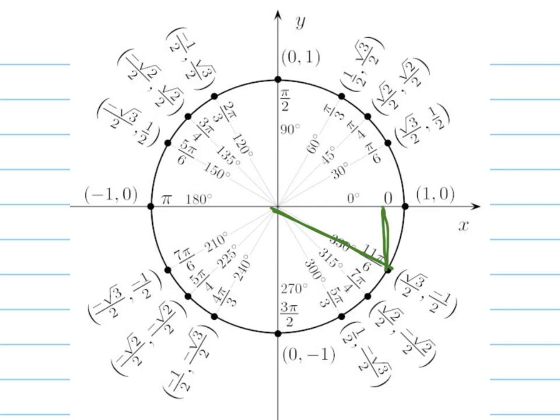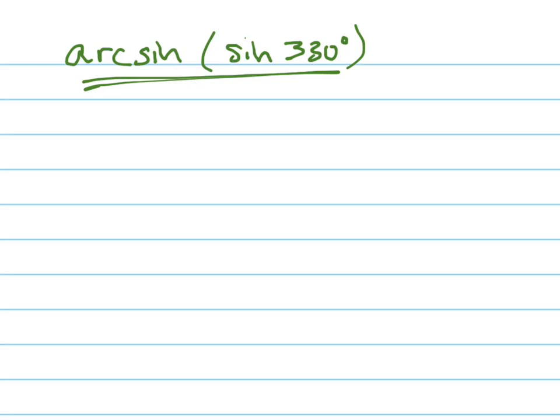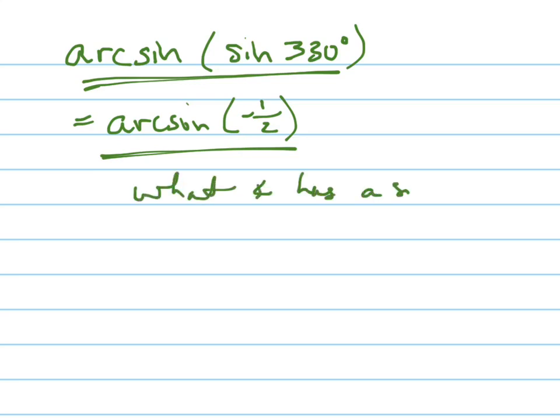Here's 330 right here. So what's the sine of 330? It's negative one-half. So this is equal to the arc sine of negative one-half. But now you have to consider this problem separately. What is the arc sine of negative one-half? In other words, what angle has a sine of negative one-half?